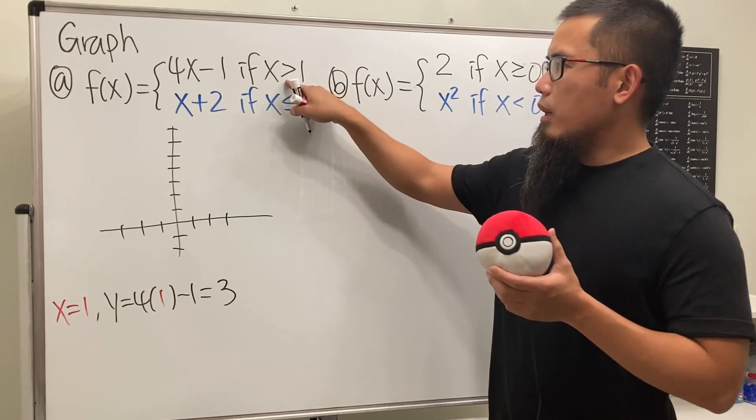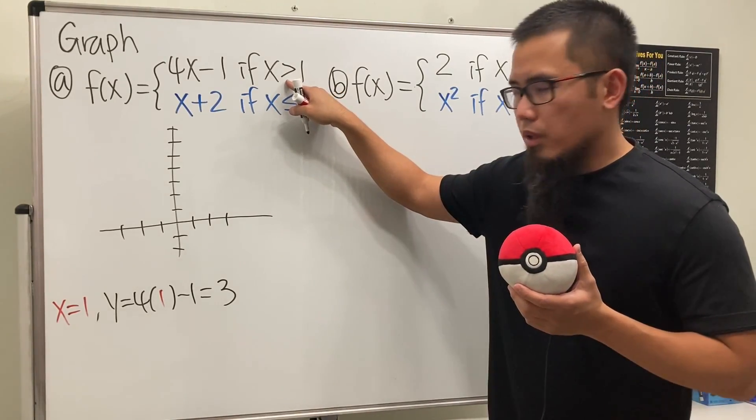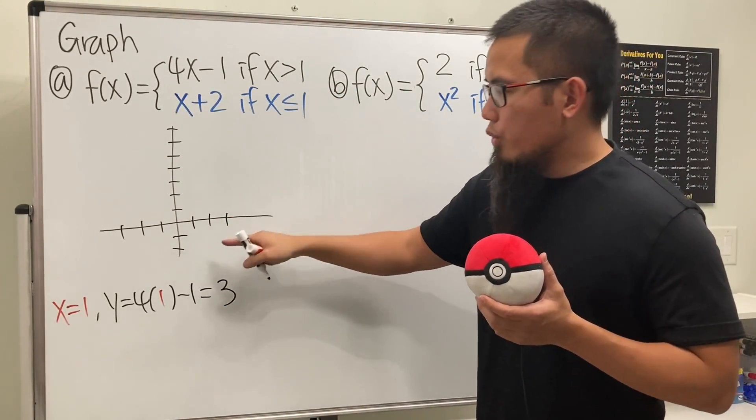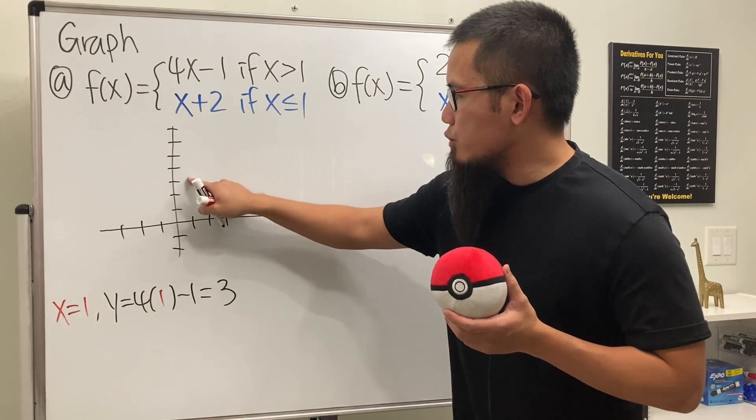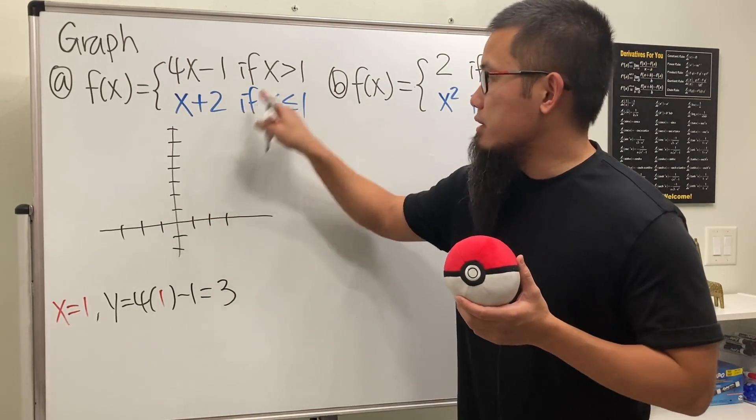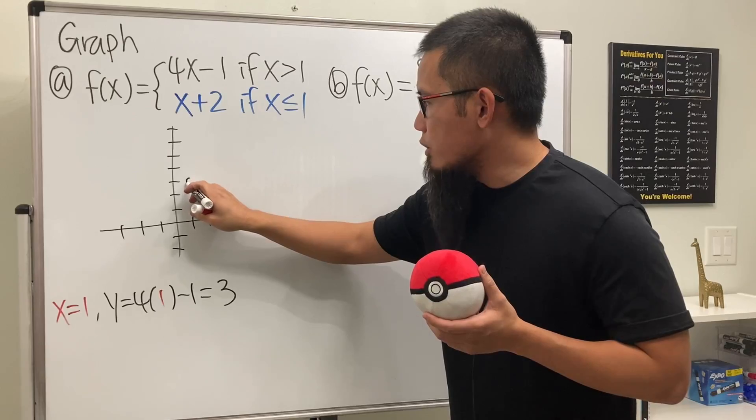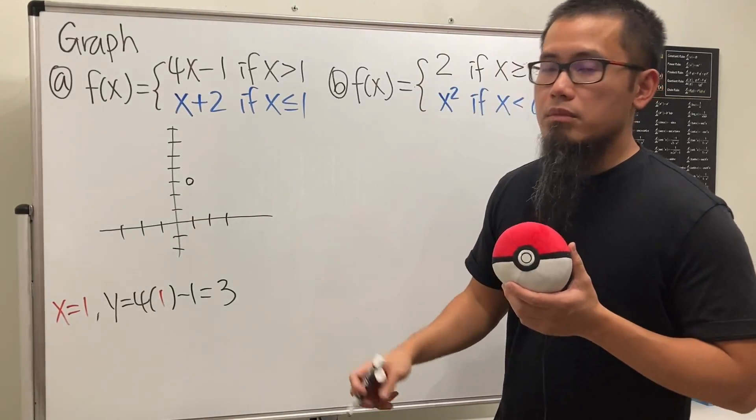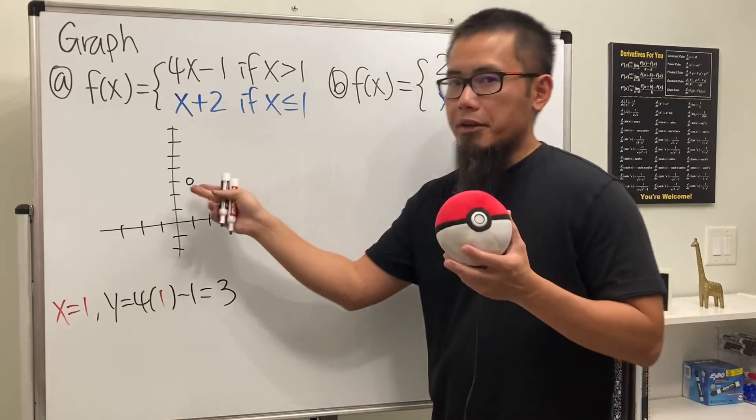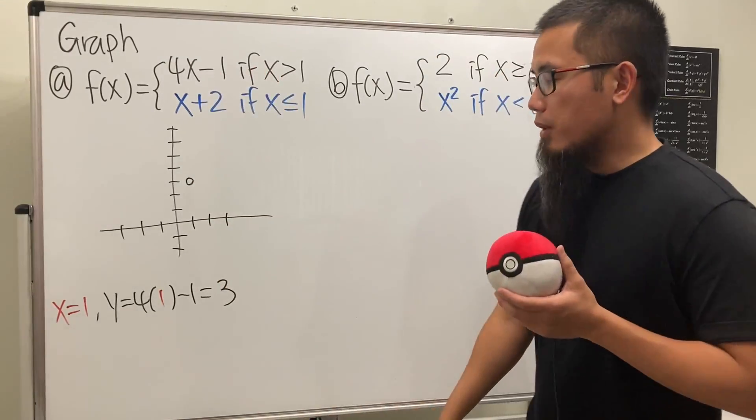But here, x cannot be equal to 1. What do we do? Usually, we just go to 1, 3, and put a point. But here, because x is not equal to 1, we just put down an open circle like that. Then that will be the starting point, but it's actually a starting open circle for this segment.